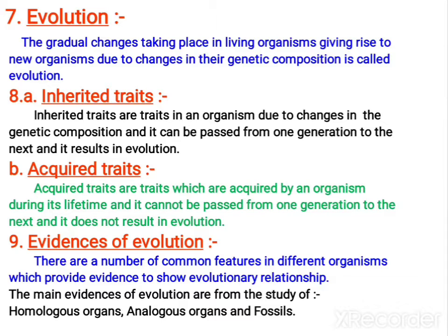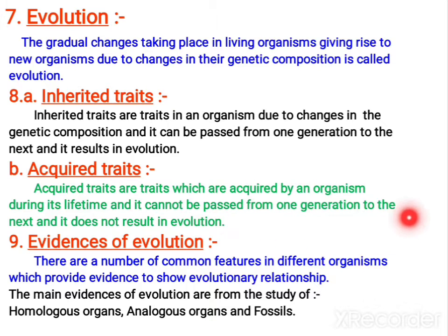The next one is acquired traits. Acquired traits are the changes in the organism that occur during its lifetime — they cannot be passed from one generation to another generation. They are due to environmental changes which produce some changes. That type of change cannot be inherited.